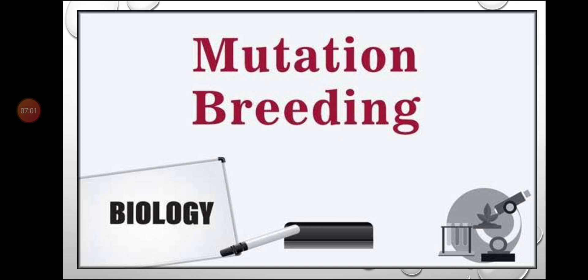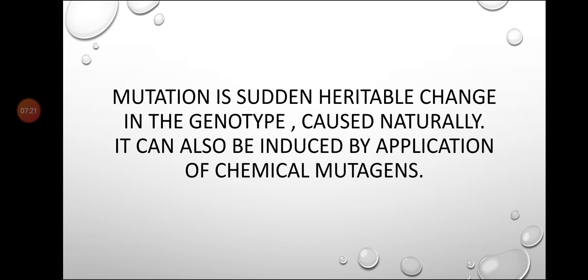Next topic: mutation breeding. Mutation means sudden heritable change in the genotype. Mutations occur naturally, but can also be induced by applying chemical mutagens. There are two types of mutagens: physical or natural mutagens, and chemical mutagens.